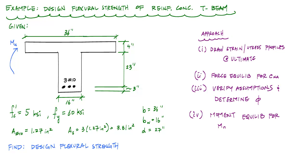We're going to draw the strain and stress profiles first at ultimate — I look at that as drawing a free body diagram or schematic. If you can draw this, you don't have to memorize any equations for any beam analysis. Next, we'll apply force equilibrium to calculate the neutral axis depth, then verify assumptions, determine the strength reduction factor phi, calculate the nominal moment using moment equilibrium, and then multiply M sub N by phi to get the design moment strength.